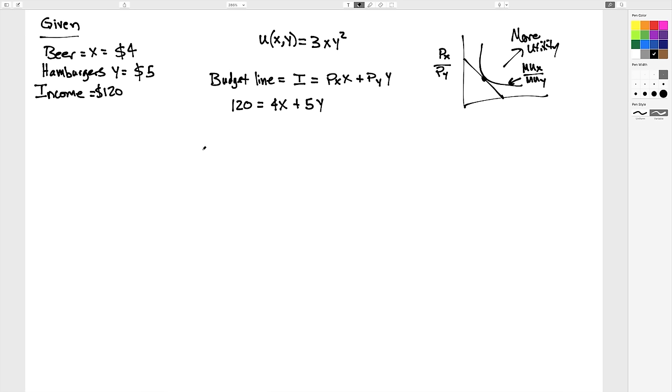So we need to find the point at which marginal utility of X over marginal utility of Y, or the slope of the indifference curve, equals price of X divided by price of Y, or the slope of the budget line.